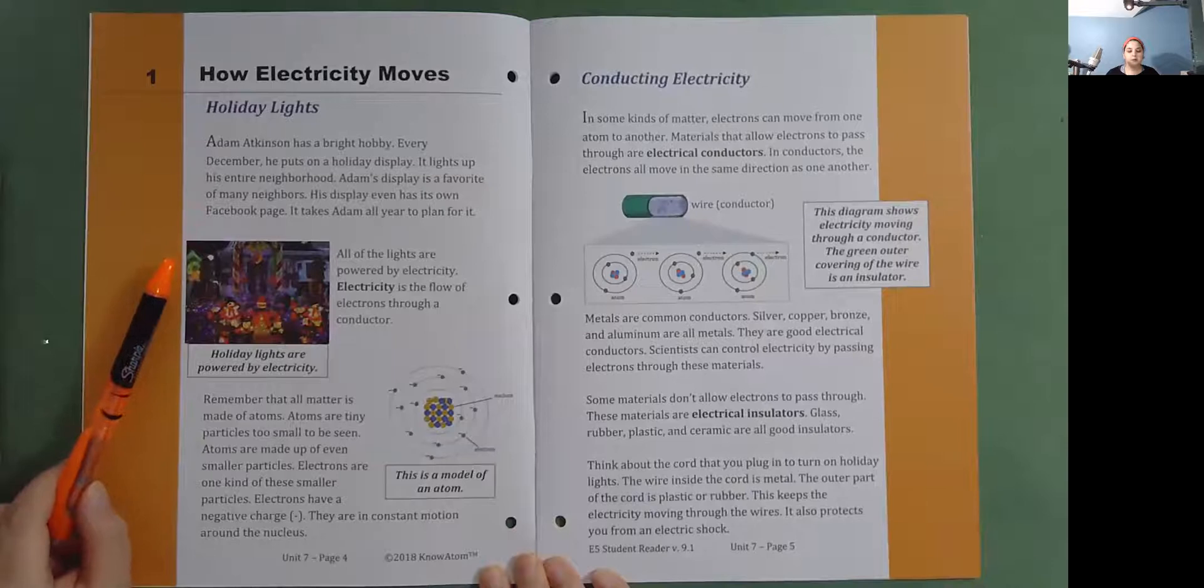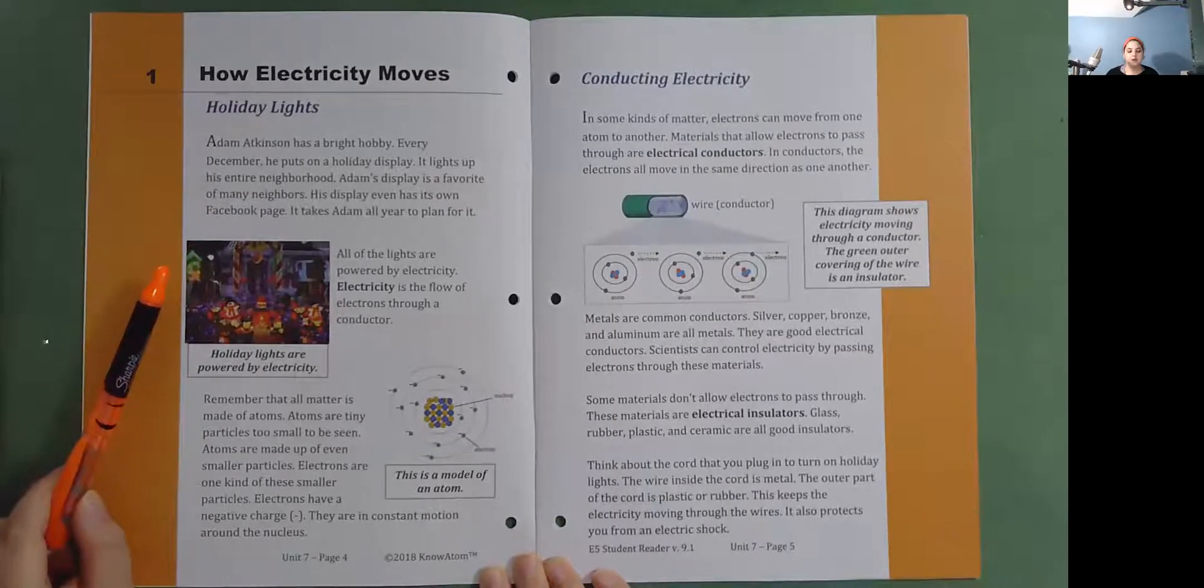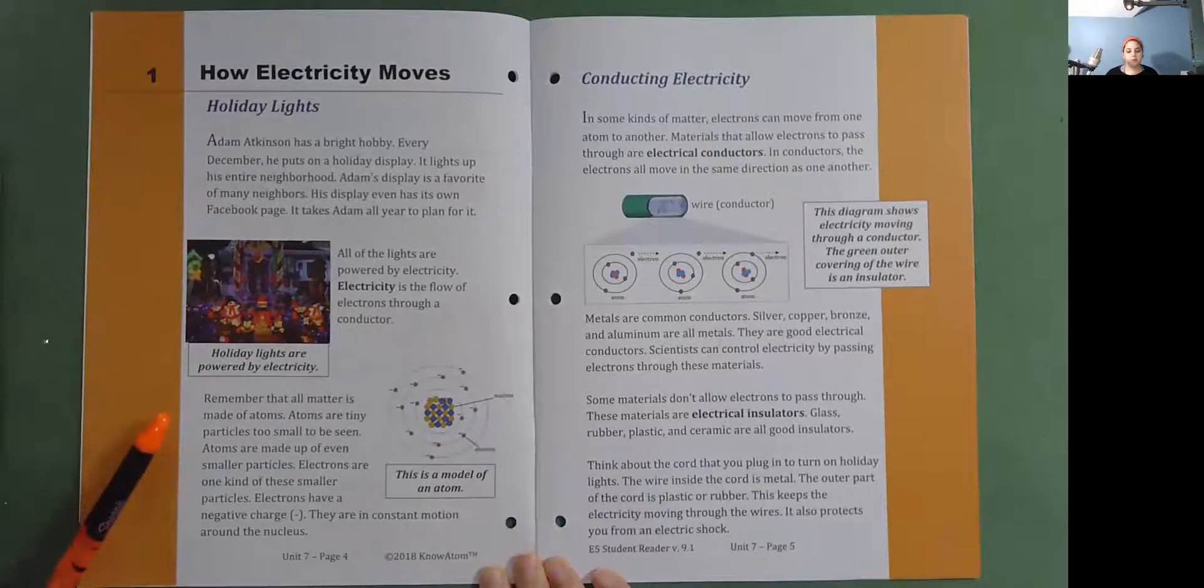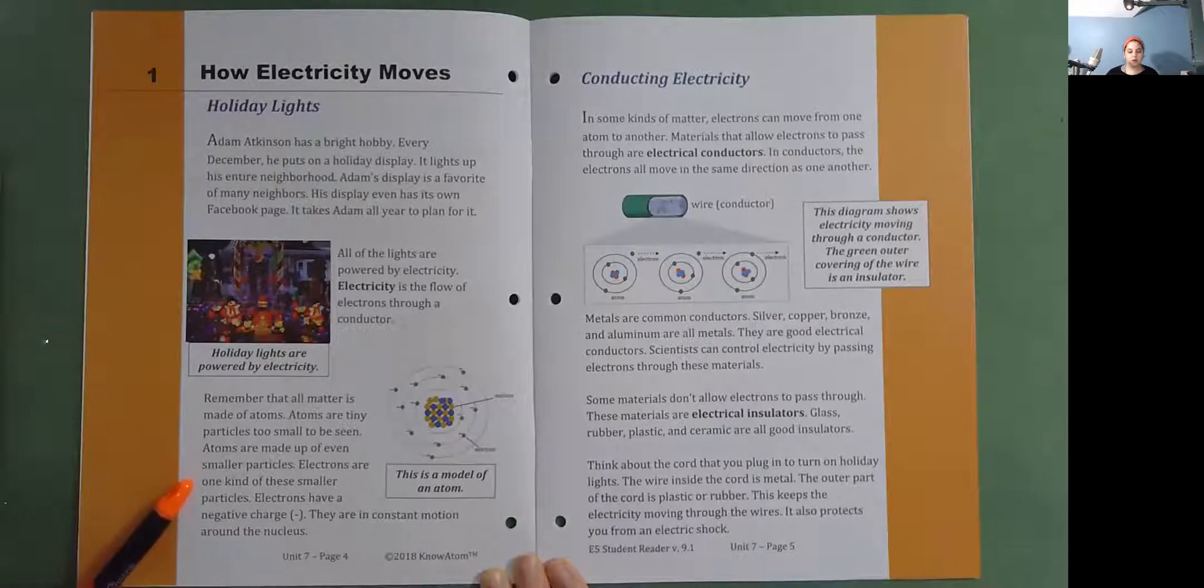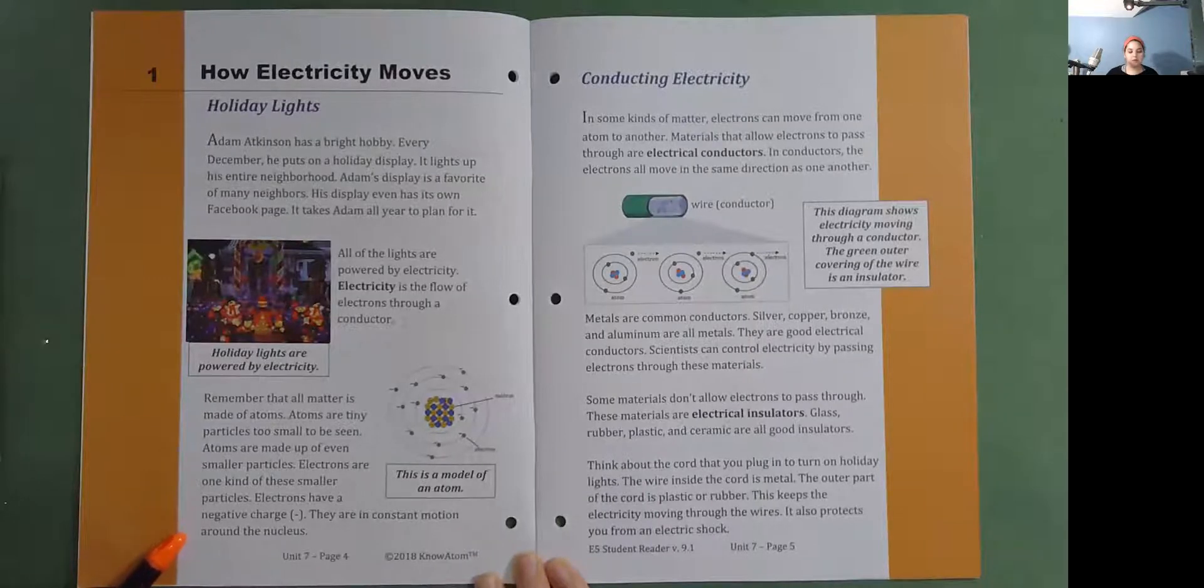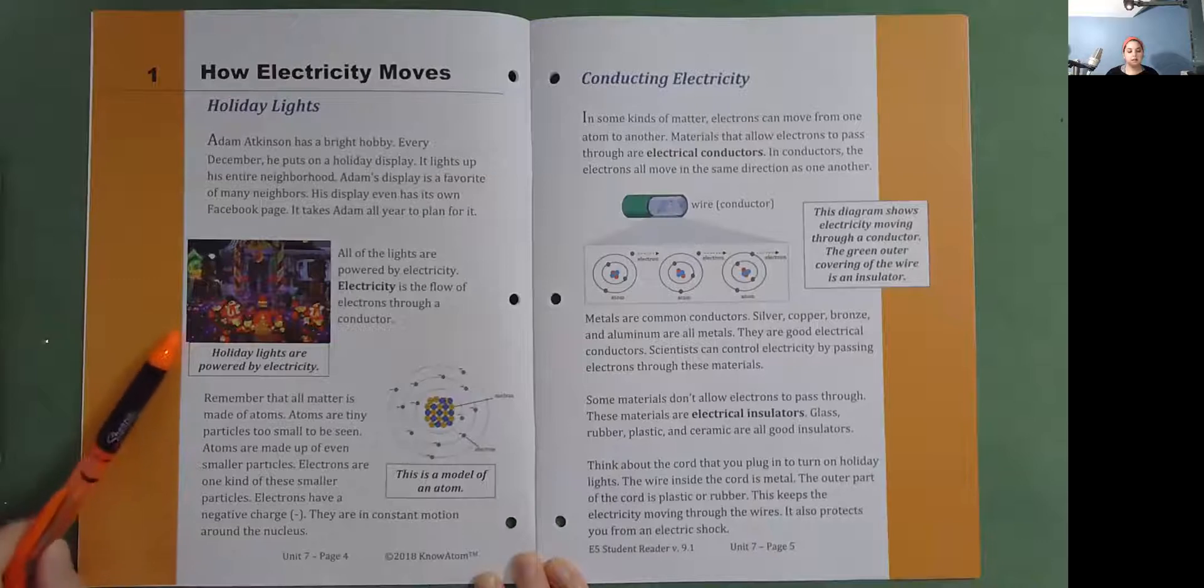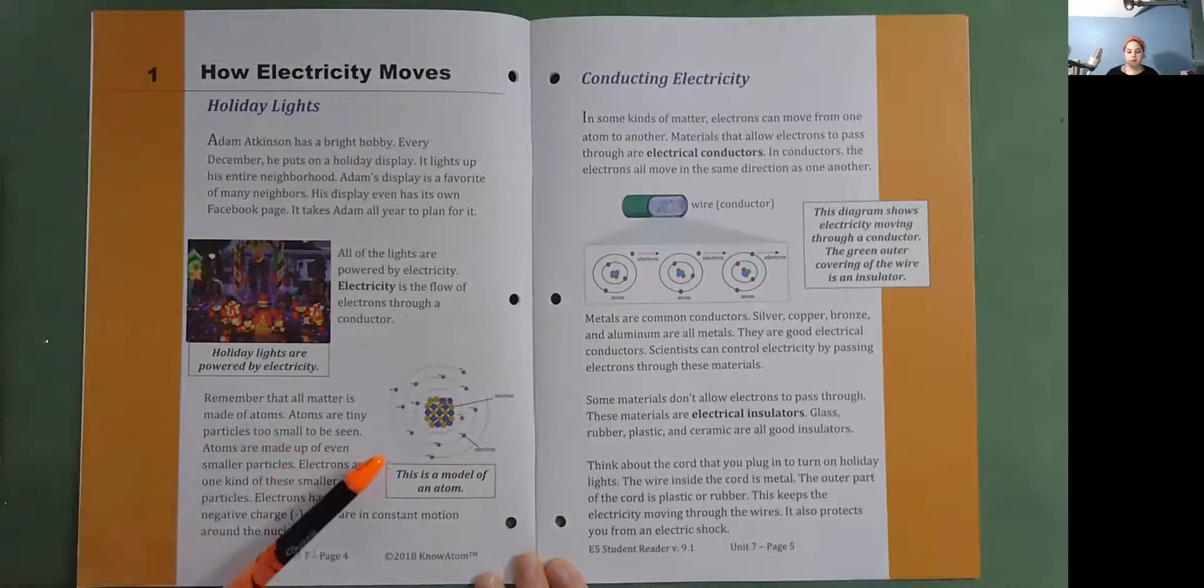All of the lights are powered by electricity. Electricity is the flow of electrons through a conductor. Remember that all matter is made of atoms. Atoms are tiny particles, too small to be seen. Atoms are made up of even smaller particles. Electrons are one kind of these smaller particles. Electrons have a negative charge. They are in constant motion around the nucleus. Holiday lights are powered by electricity. This is a model of an atom.